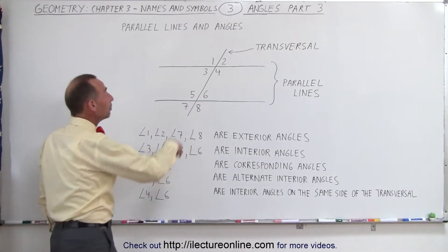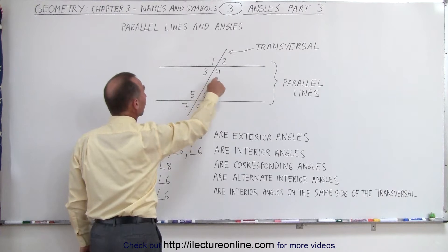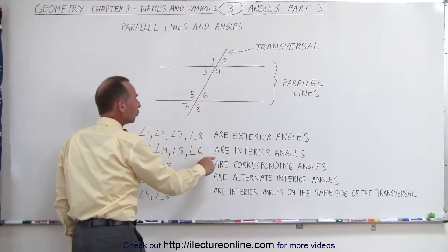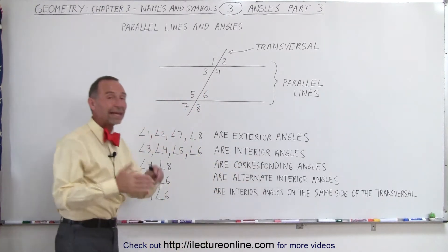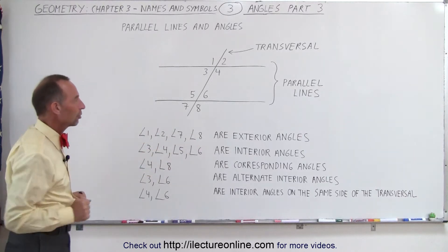Then the angles in between the two parallel lines—three, four, five, and six—those are called interior angles. So we have the exterior angles and the interior angles.